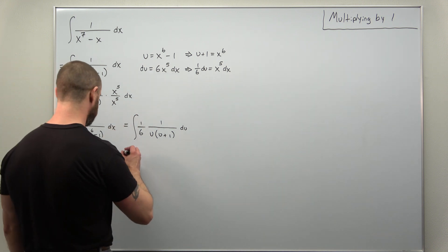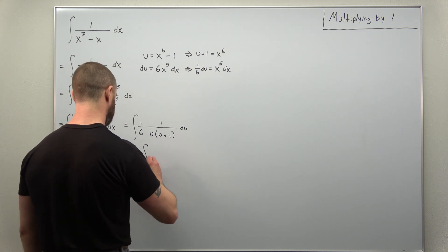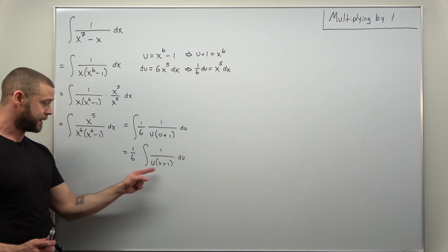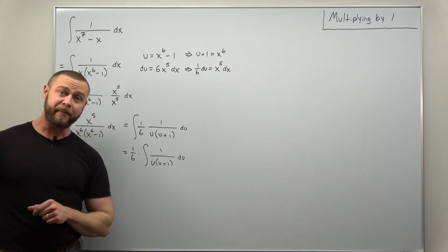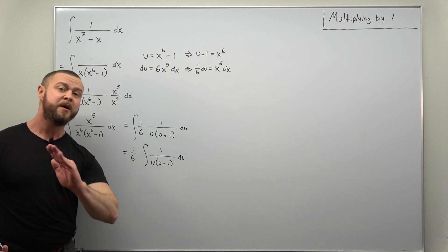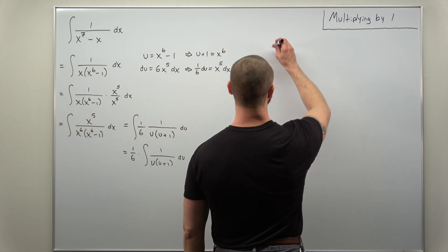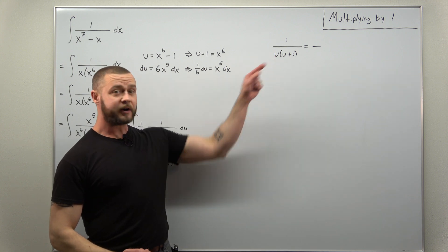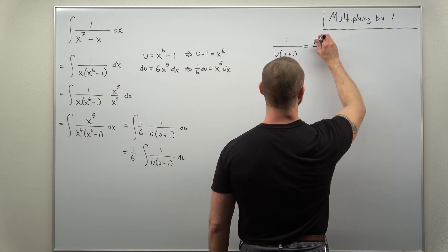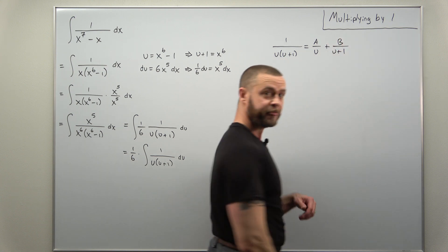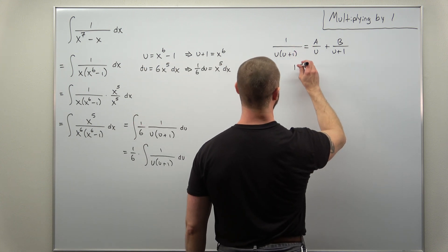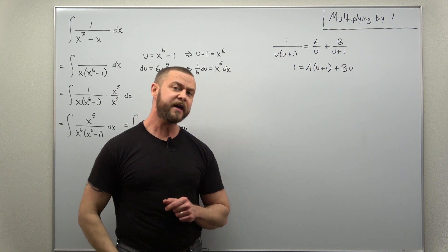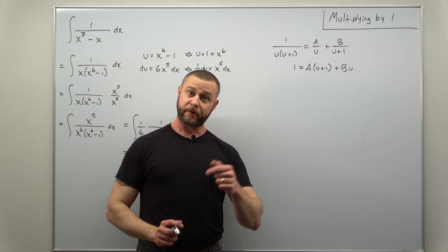What you can do is bring that 1/6 out front. Now we just have to go through a much simpler partial fraction decomposition than if you were to try to fully factor x⁶ minus one involving x. So let's do the partial fraction decomposition: we have 1 over u(u+1). Fortunately this denominator has two distinct linear factors. We'll get our partial fractions as A over u plus B over (u plus one). Clearing fractions gives us: 1 equals A(u plus one) plus Bu.